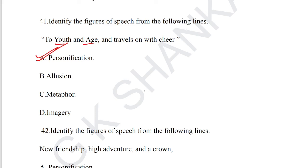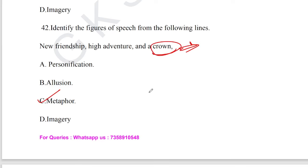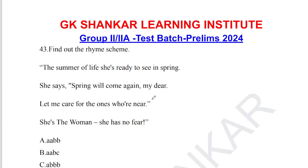Question number 41: identify the figure of speech from the line 'To youth and age and travels on with cheer.' Option A — personification — is correct, as youth and age are personified here. Question number 42: identify the figure of speech from 'New friendship, high adventure, and a crown.' Crown is compared to achievements or reaching a target, so option C — metaphor — is the answer for question number 42.